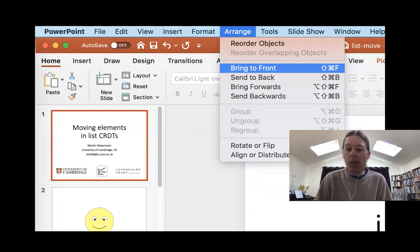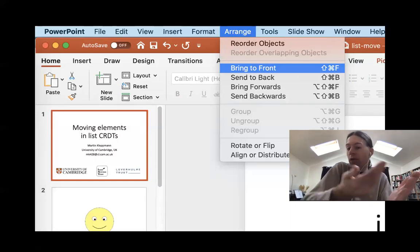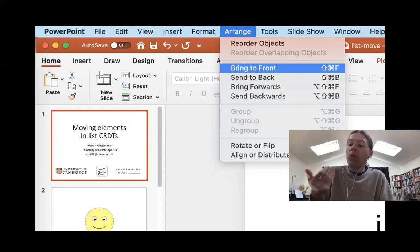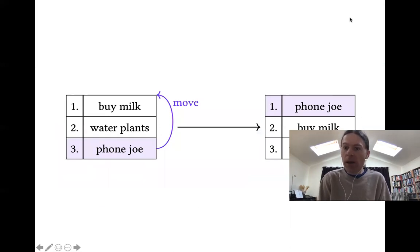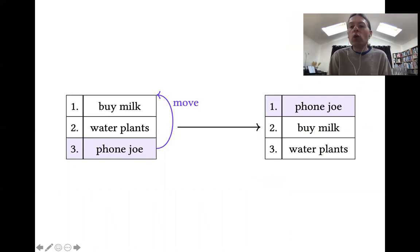In PowerPoint and many other graphics software there's this function called bring to front which will take the selected element and reorder it to be on top of the other items. A different example where you might want to reorder list elements is in a to-do list. You can drag and drop items to reorder them so the highest priority tasks are at the top. In this example, we've got a to-do list containing buy milk, watering the plants, and phoning Joe. The user reorders this list moving phone Joe to the top, so buy milk and watering the plants become elements two and three respectively.